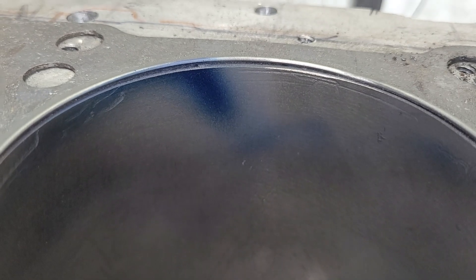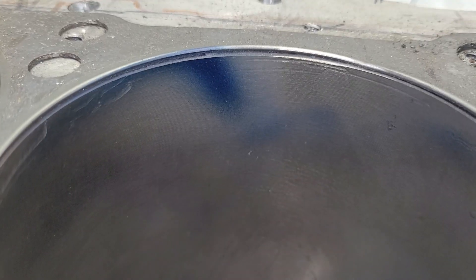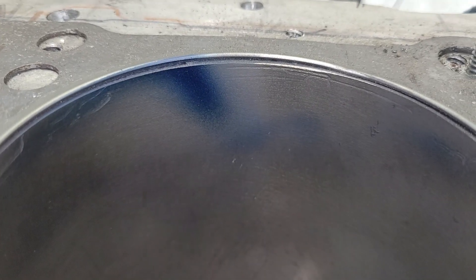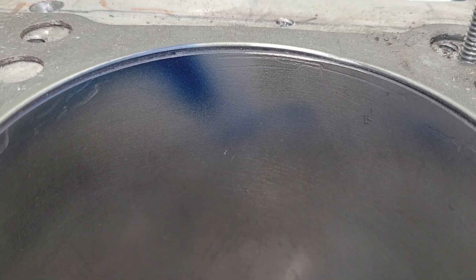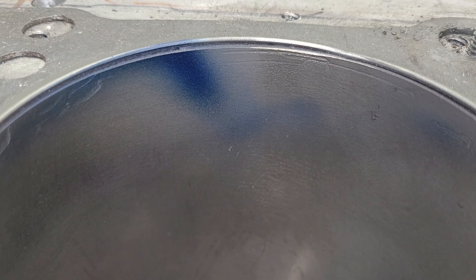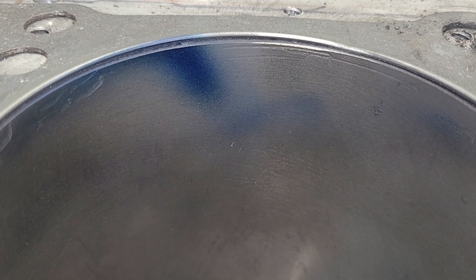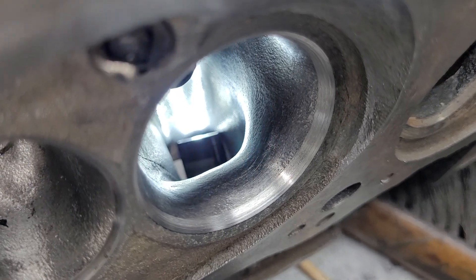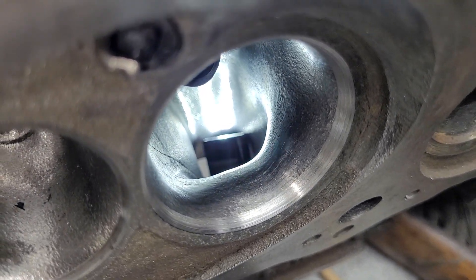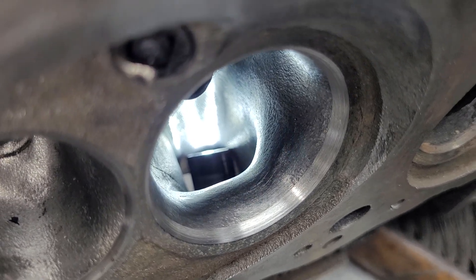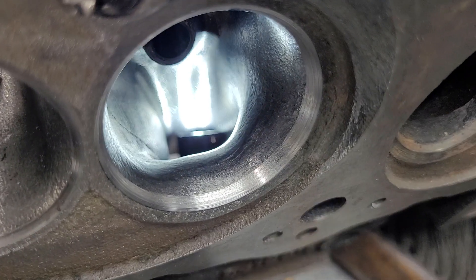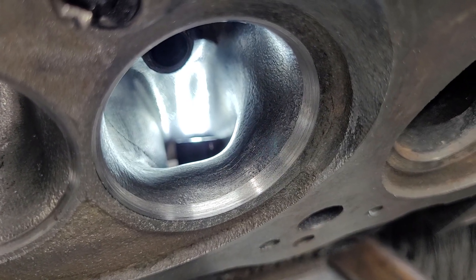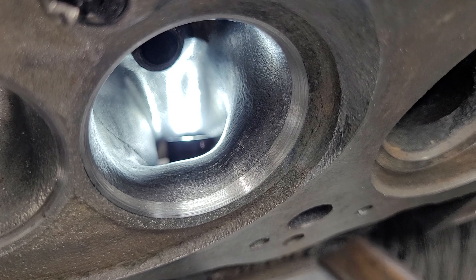You can really see how the Dykem is just hitting that one spot and the rest of that bowl has basically nothing. The marks on the right are old ones, but that angle bit of Dykem, that's from just now. The short side radius got some work but nothing major - just a little reshape, a touch wider, and went over with a cartridge roll, nothing big.